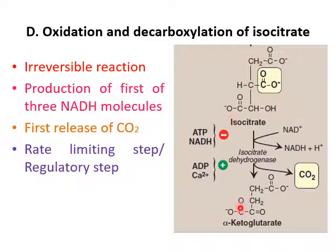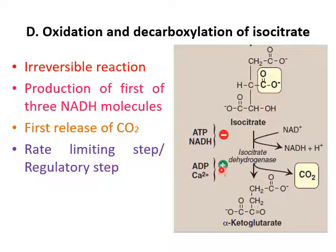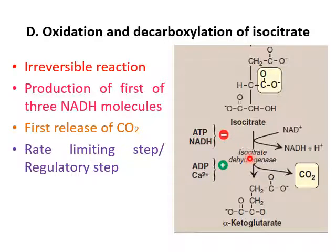In the next step, isocitrate is converted into alpha-ketoglutarate through oxidative decarboxylation. The enzyme used is isocitrate dehydrogenase, and this reaction is irreversible — it is also a rate-limiting step. One NADH is produced along with release of carbon dioxide. Regulation: if ATP and NADH are present in high concentration, they inhibit isocitrate dehydrogenase; while high concentrations of ADP and calcium stimulate it. This is where the first NADH and first carbon dioxide are produced.